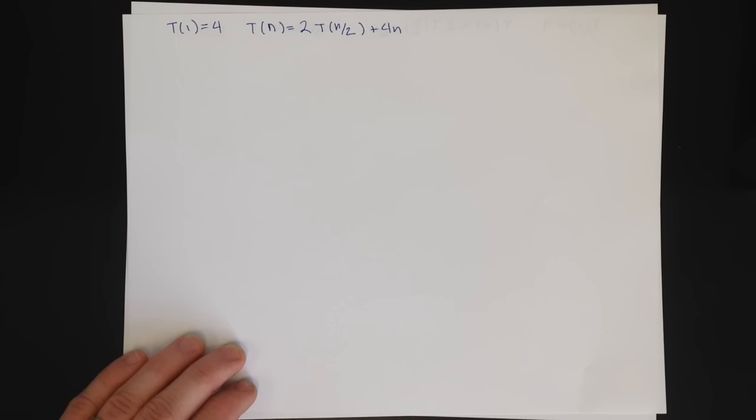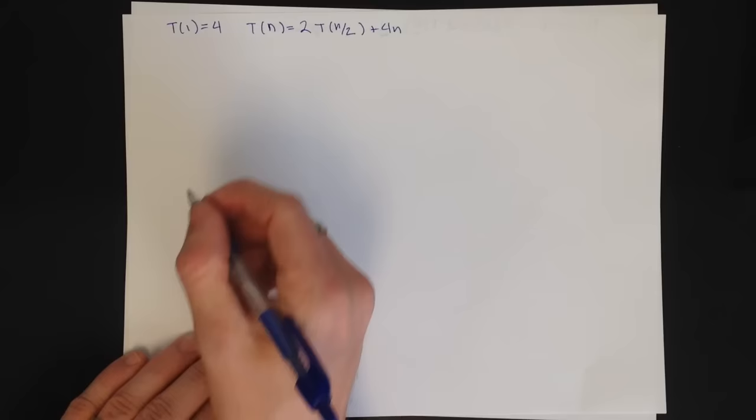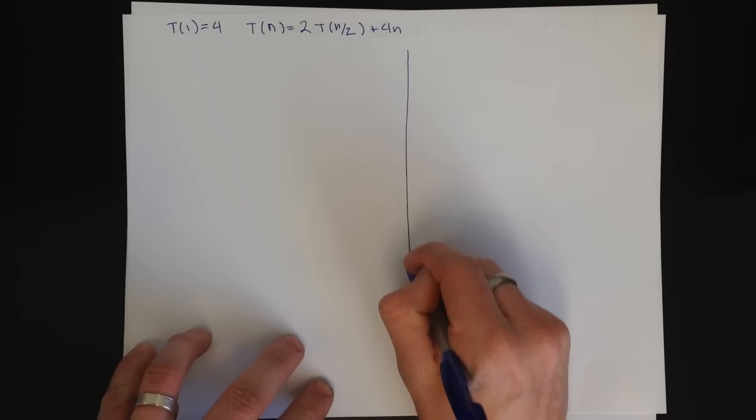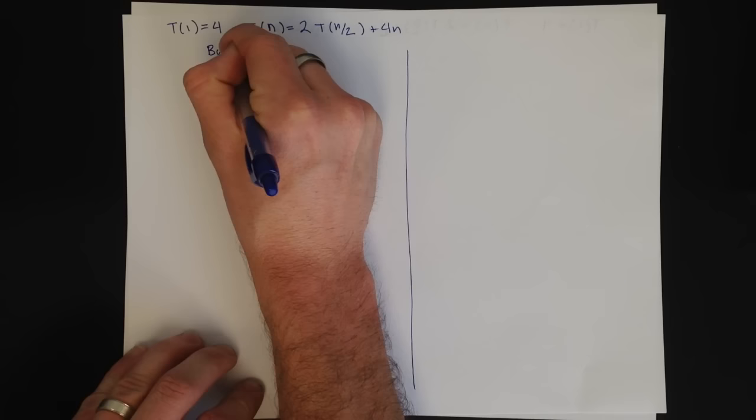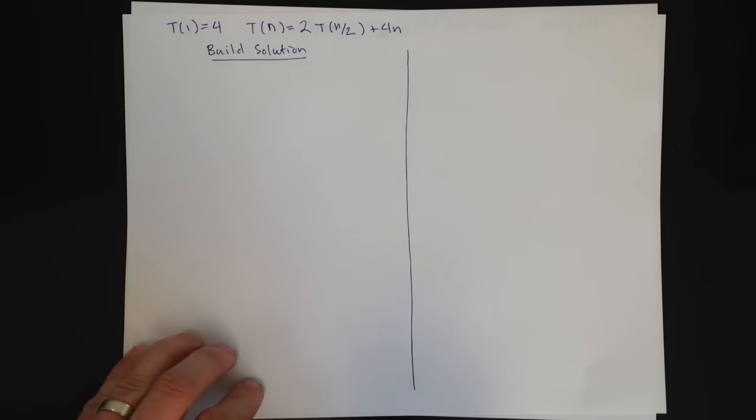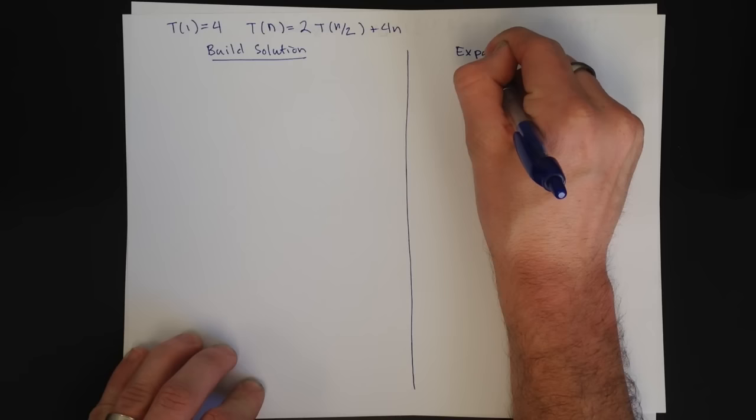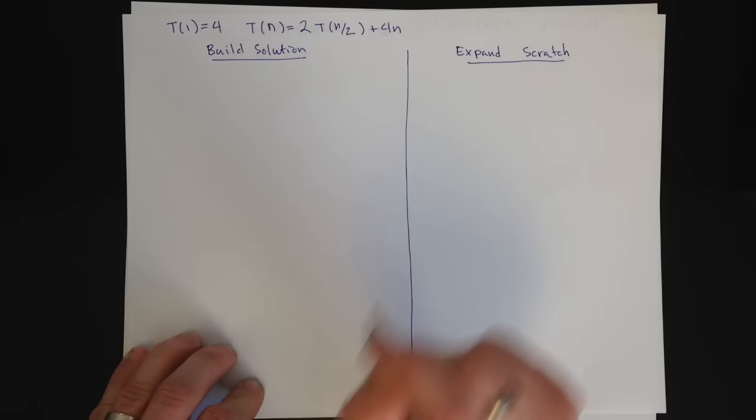So we'll start with the substitution method. I find the easiest way to do the substitution method is to divide my workspace into two pieces. What I'm going to do on the left is build a solution. So I call this my build solution space. And what I'm going to do on the right is expand. So this is like my expanding scratch space. Whenever I need to expand something, I'm going to do it on the right, and then I'll be able to plug it in.